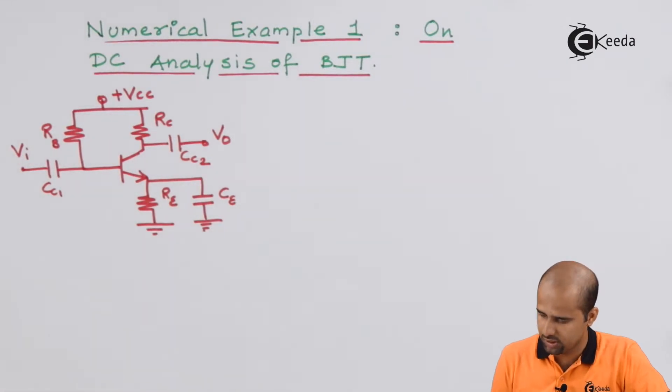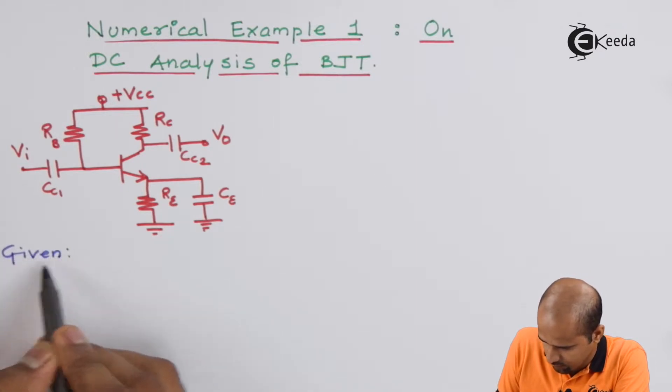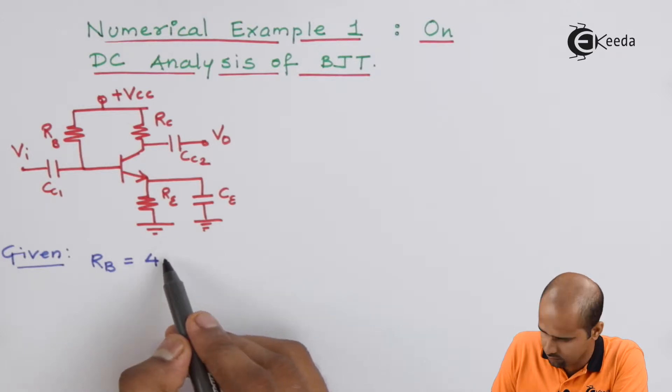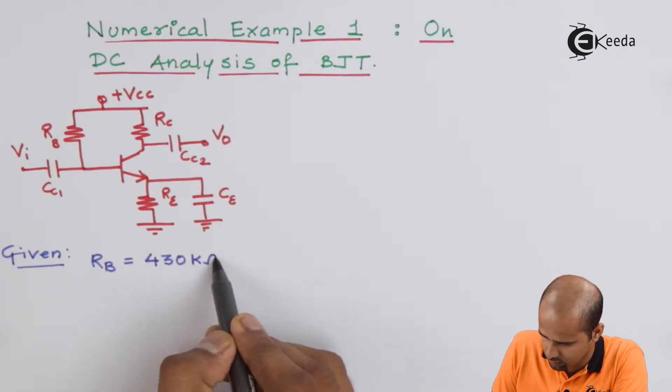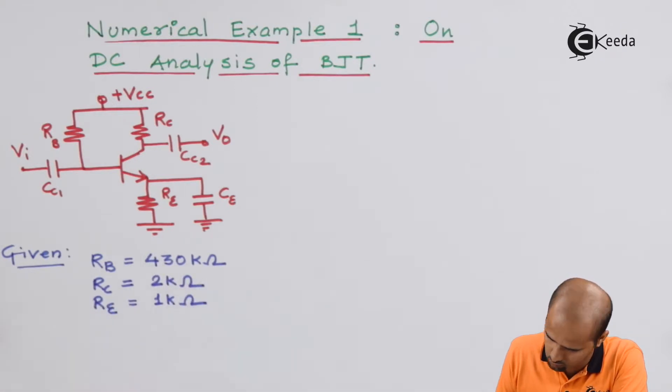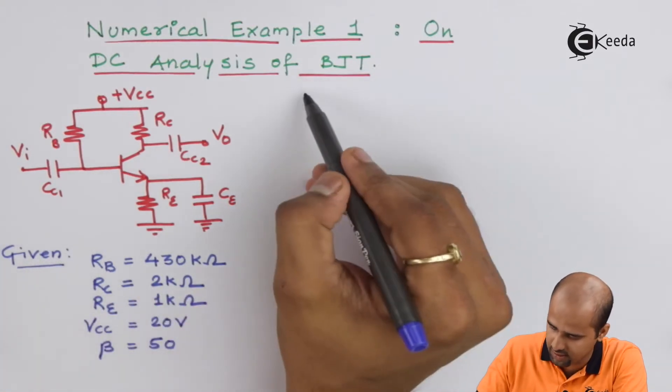In this particular circuit, whatever given is the value of beta is given as 50. So all these values are given and the question is what they have asked us.